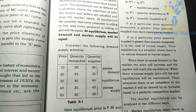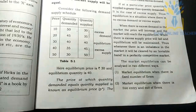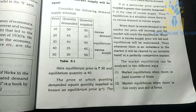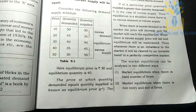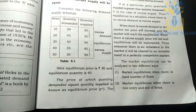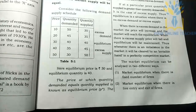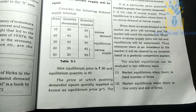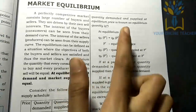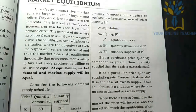What is equilibrium in this point? What is the equilibrium price? The price at which quantity demanded equals quantity supplied is the equilibrium price. We use P star for the equilibrium price and Q star for the equilibrium quantity.